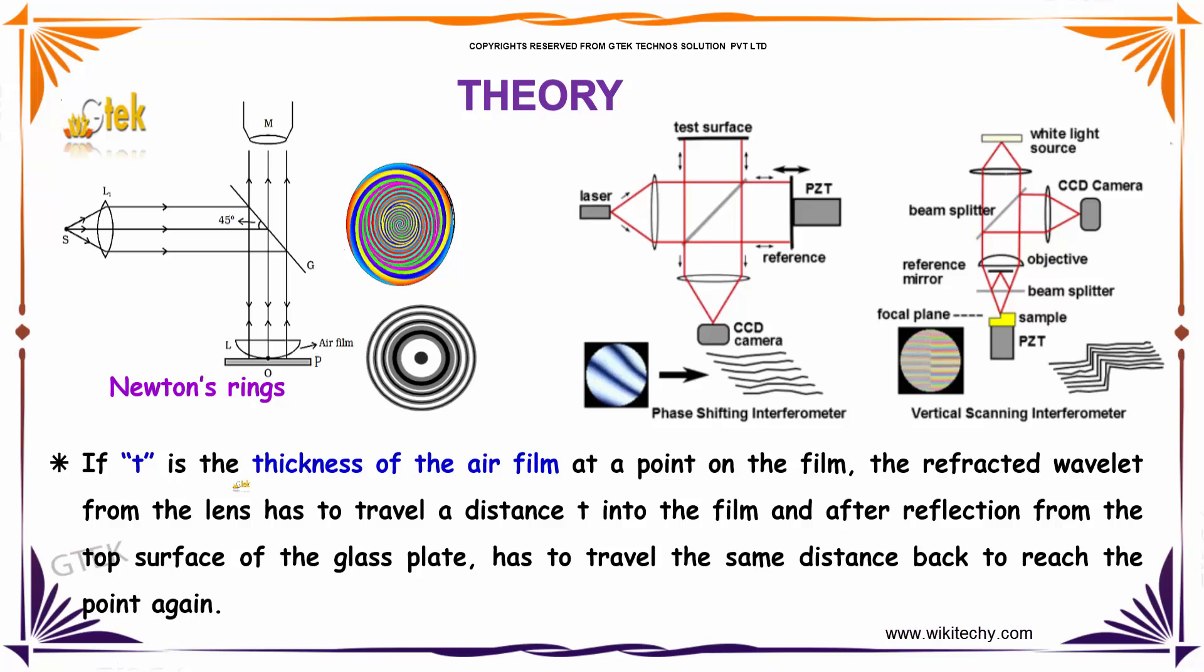So if T is the thickness of the air film at a point on the film, the refracted wavelet from the lens has to travel a distance T into the film and after reflection from the top surface of the glass plate, has to travel the same distance back to reach the point again.